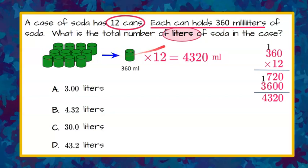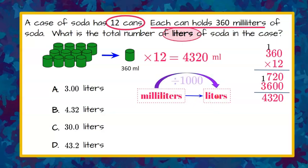One more step. We need to take our milliliters and convert it to liters to match our answers. When we go from milliliters to liters, we are getting to a larger unit quantity, but our number gets smaller. So there are 1,000 milliliters in 1 liter.